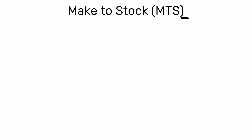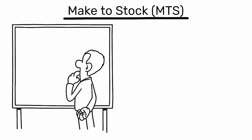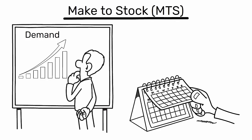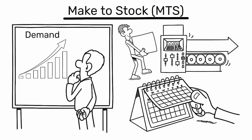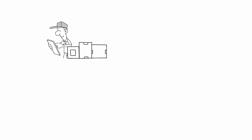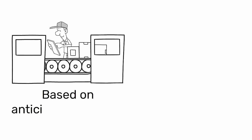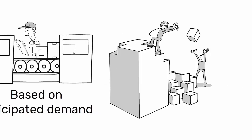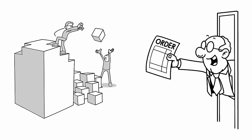Make to Stock, MTS, is a traditional production strategy that relies on demand forecasts to drive production schedules. In this approach, manufacturers produce goods based on anticipated demand and then stock these items in inventory until customer orders are received.